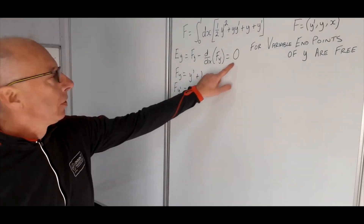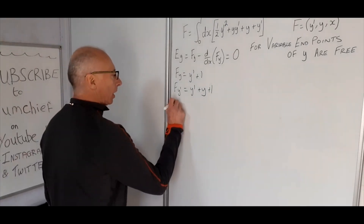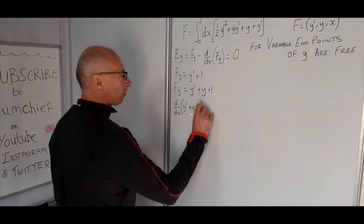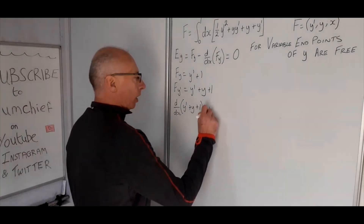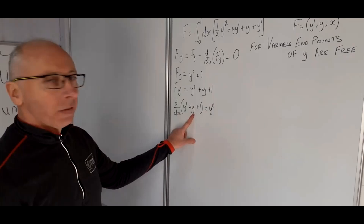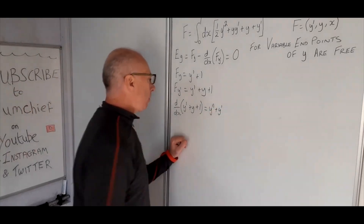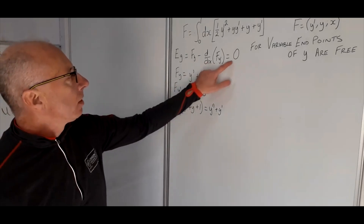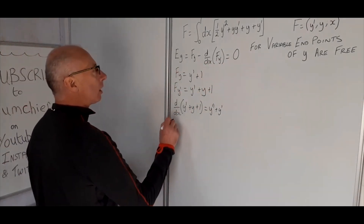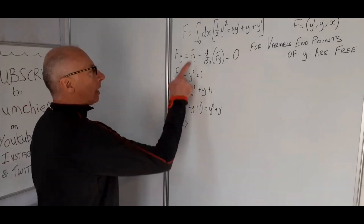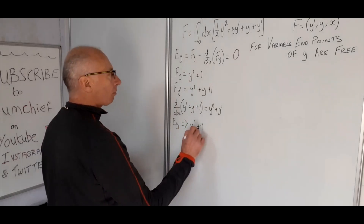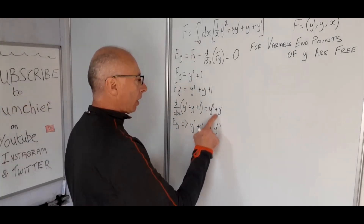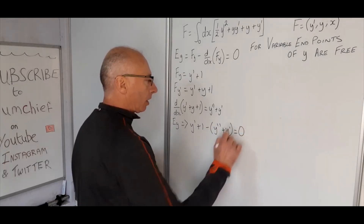Now we need to take the total derivative with regards to this y prime expression. We take d/dx of (y prime + y + 1). The derivative of y prime gives us y double prime. The derivative of y is y prime, and the derivative of 1 disappears. So now writing this in Euler-Lagrange form: f_y is y prime + 1, and subtracting gives us y double prime + y prime, set equal to zero.